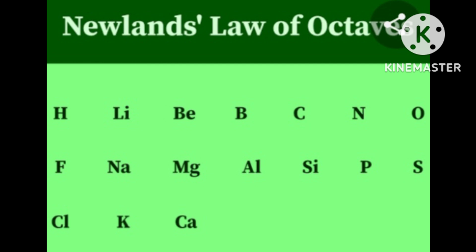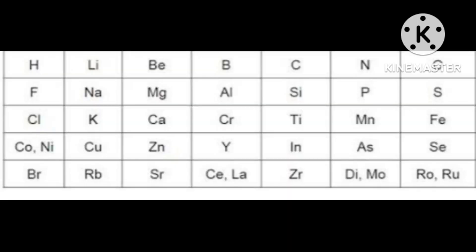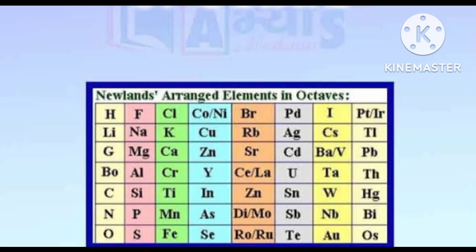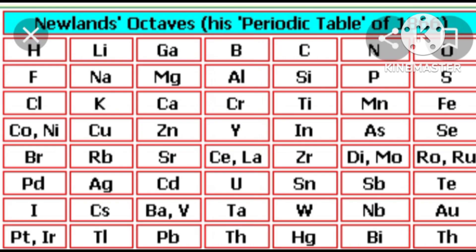He called them octaves because the first and 8th elements have the same chemical properties, and this pattern is repeated. For example, starting at lithium: beryllium is the second element, boron is the third element, and sodium is the 8th element — so lithium and sodium show similar chemical properties. We can also observe that magnesium to calcium show the same chemical properties, since magnesium is the 1st and calcium is the 8th element in that sequence.